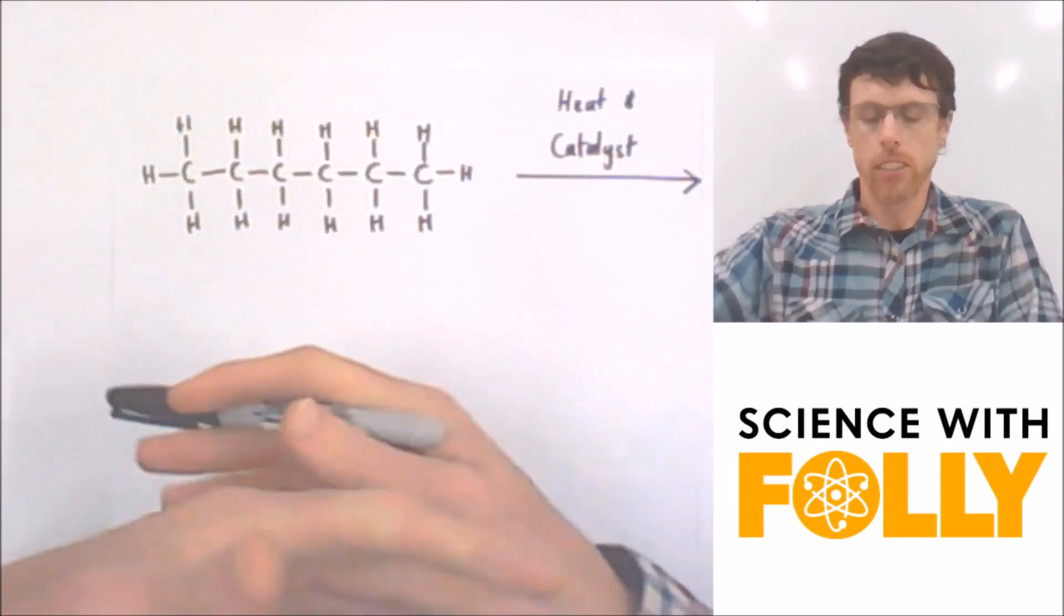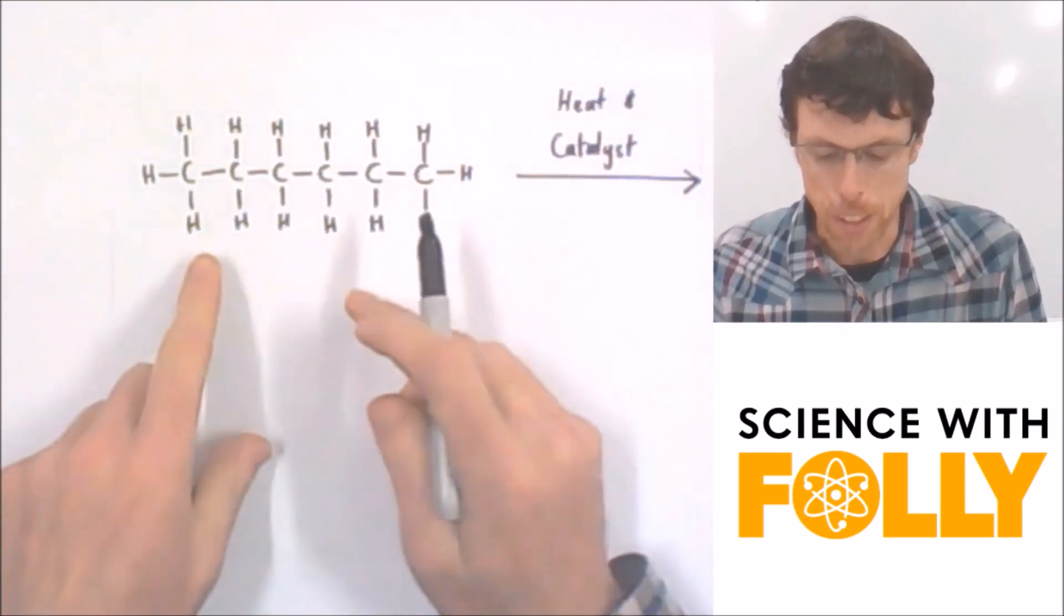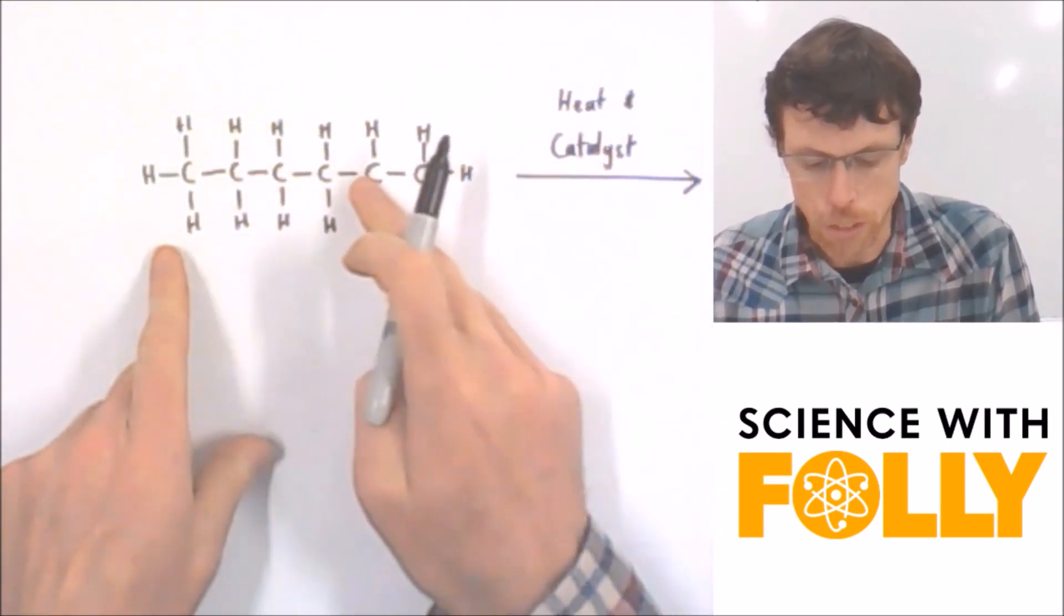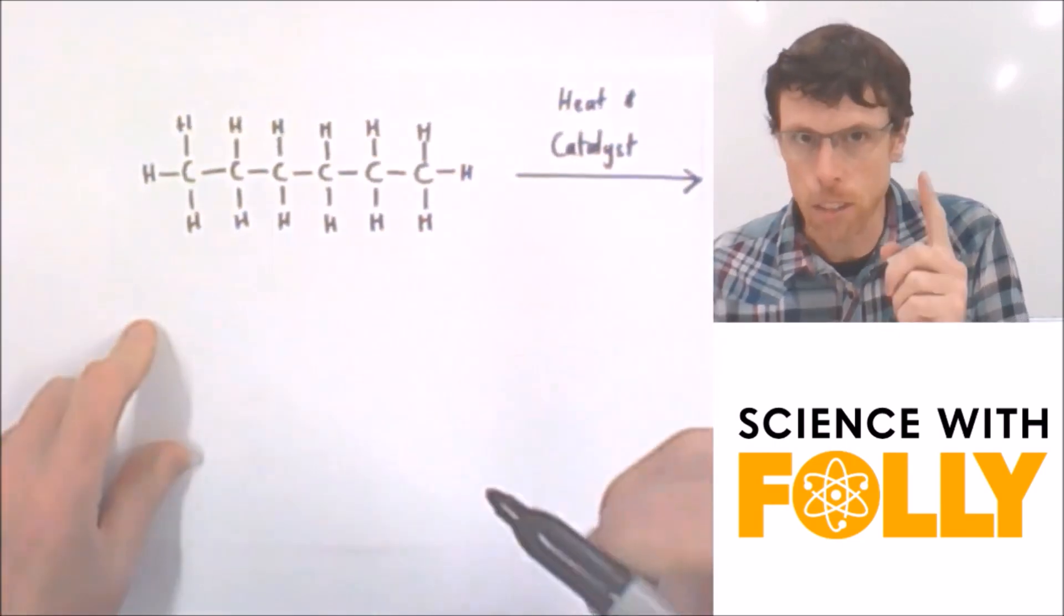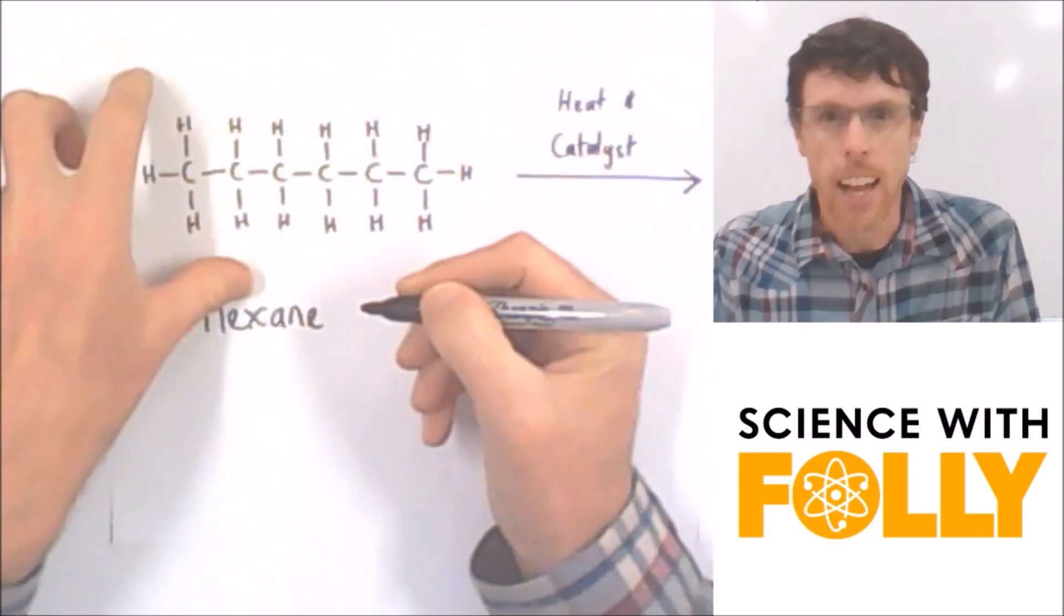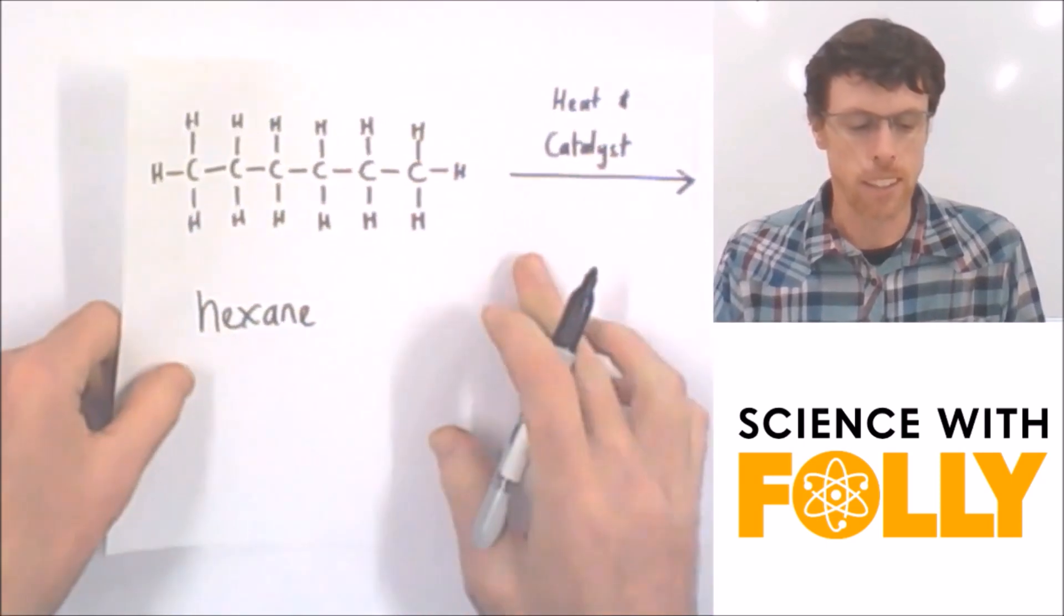So let's look at this example reaction with the full structural formula. Here I've got an alkane. 1, 2, 3, 4, 5, 6. What is it? Pentane? No, no it's not pentane, it's hexane. And hexane reacts with heat and catalyst.